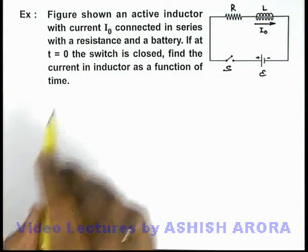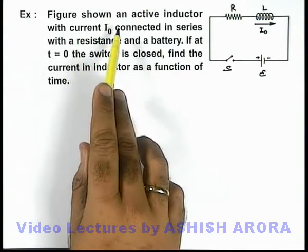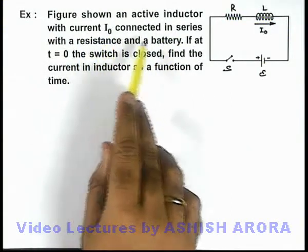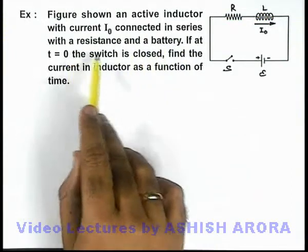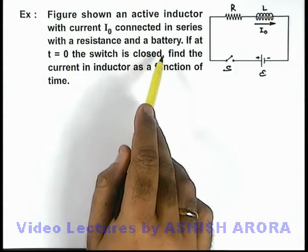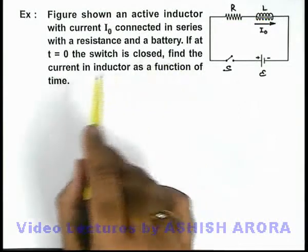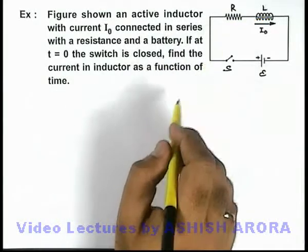In this example we are given a figure showing an active inductor with current i-not, which is connected in series with a resistance and a battery. If at t equal to zero the switch is closed, we are required to find the current in inductor as a function of time.